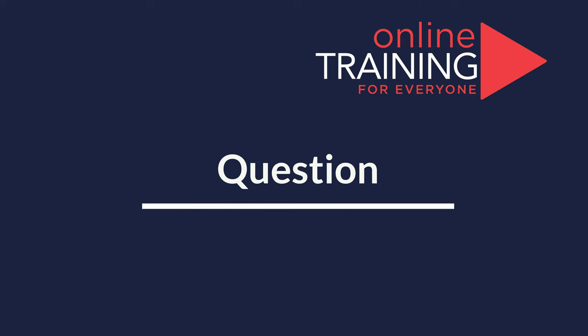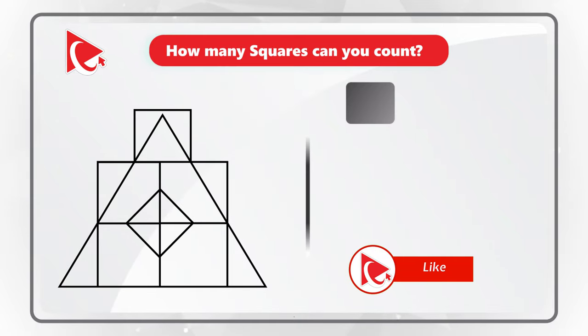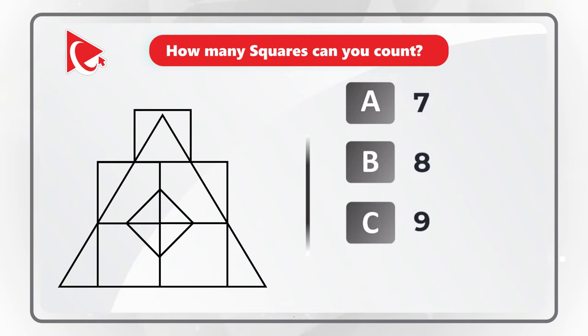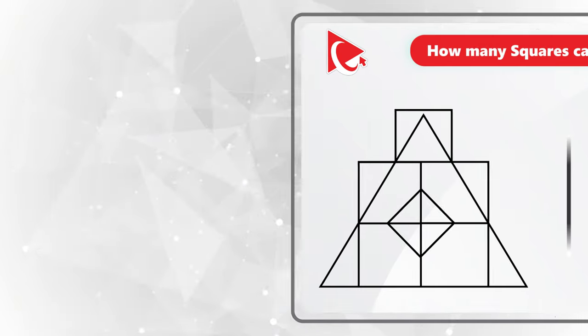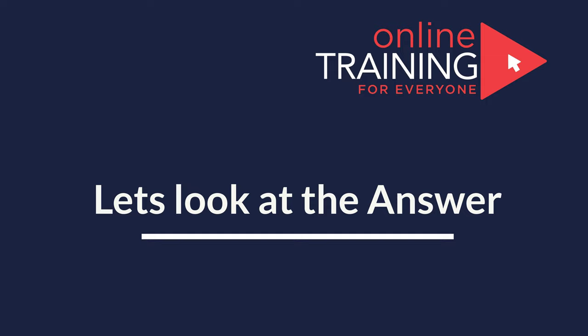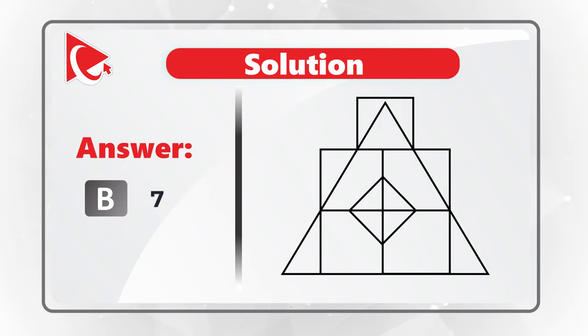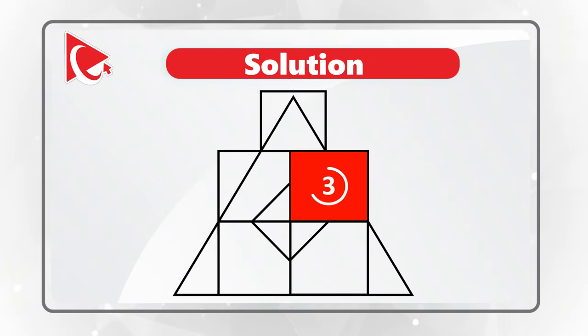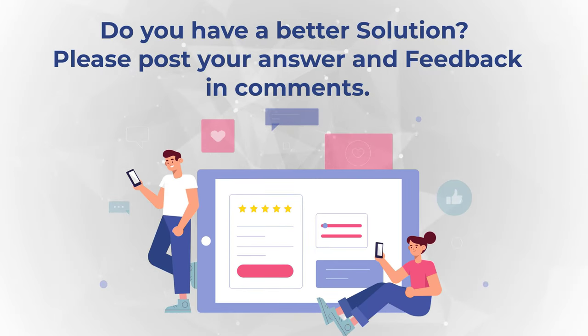Here is an interesting question where you need to correctly count the number of squares in the picture. Take a close look and select from: Choice A – 7 squares, Choice B – 8 squares, Choice C – 9 squares, and Choice D – 12 squares. Make sure to count inside and outside squares. The answer is 7 squares: 1, 2, 3, 4, 5, 6, and 7. If you have a different number, please post in comments.